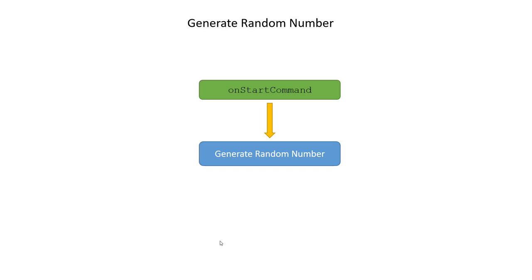Let us continue with our lesson. In the previous video we already learned how to start and stop a service. On the next step, what we'll be learning is we will create a new method to generate a random number. Whenever our service gets started we will be generating a random number, and when we stop our service we will stop the generation. Let's see in a practical way how we can do this.